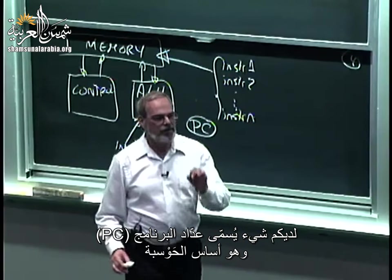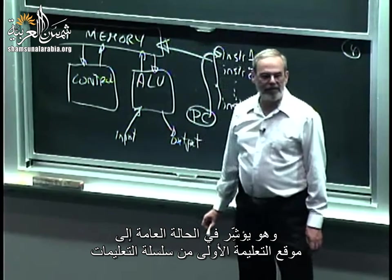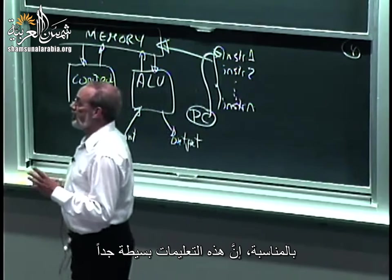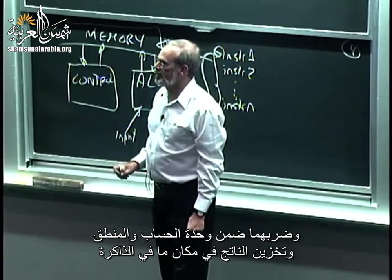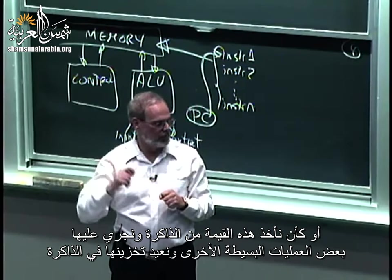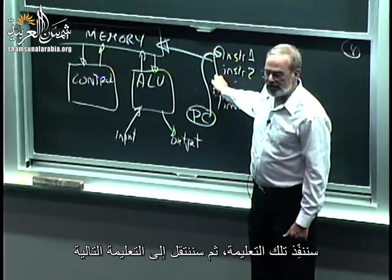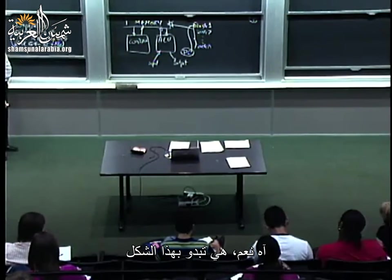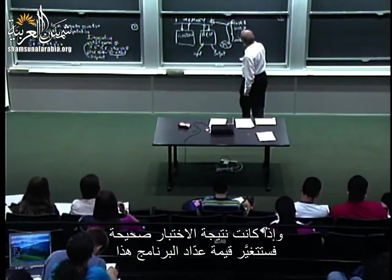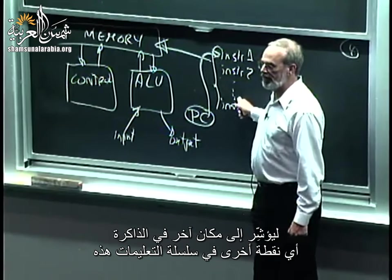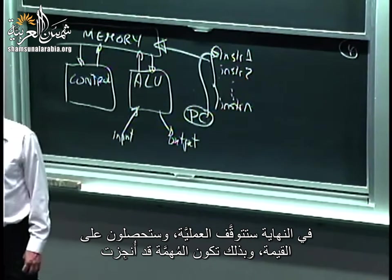We have a thing called a program counter. That program counter points to some location in memory, typically to the first instruction in the sequence. Those instructions are very simple — things like: take values from two places in memory, run them through the multiplier, and put the result back in memory. Having executed an instruction, that counter goes up by one and we move to the next one. Some instructions involve tests; if a test is true, the program counter changes to point to some other place in the sequence. Eventually you stop, a value gets output, and you're done.